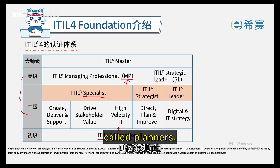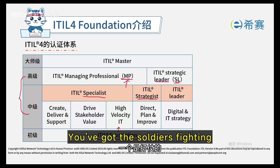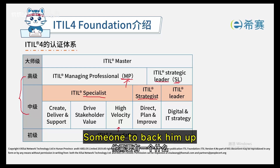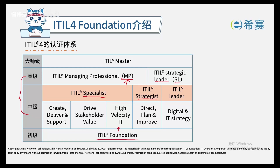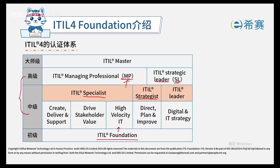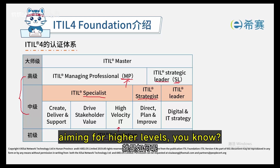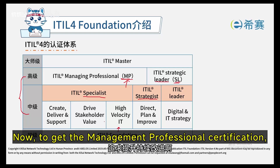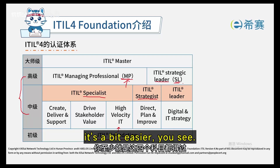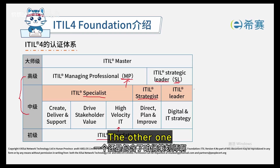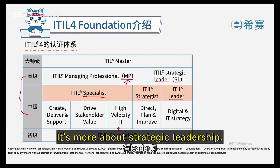Then there's another type — planners. In the military field, take war movies for example: you've got the soldiers fighting, and then there's the general. He might need someone to back him up, someone to guide him — that's where the strategist comes in. Planners guide the planning and improvement process: it's about boosting skills, aiming for higher levels, and striving for ongoing improvement. To get the Management Professional certification, you need to pass all four of these subjects. As for the Foundation level, it's a bit easier — you only need to pass two subjects.